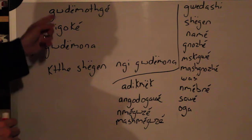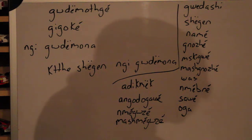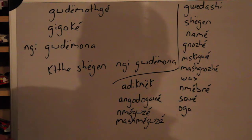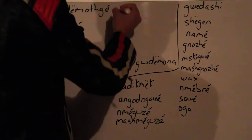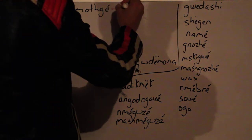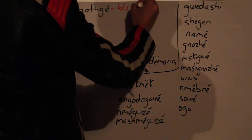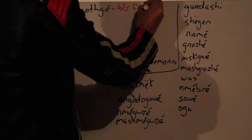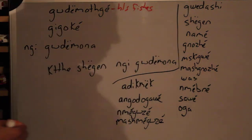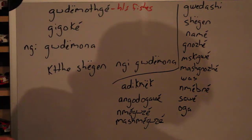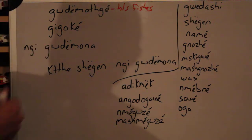The first verb we have is goudemojgé. Goudemojgé means he or she fishes. This is describing the hook, line, and sinker, or hook and line fishing.